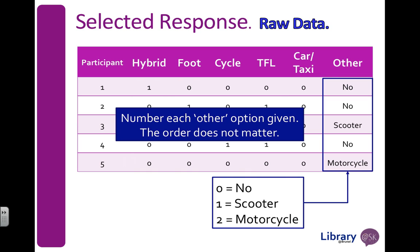Now if, for example, scooter was a really popular option and a lot of people came by that, but I didn't put it as an option on my questionnaire — that was probably my mistake. If I had lots of people saying scooter, I might consider putting it as a separate variable because it should have been on the original questionnaire. But typically speaking, it's good practice to just have it as another option.